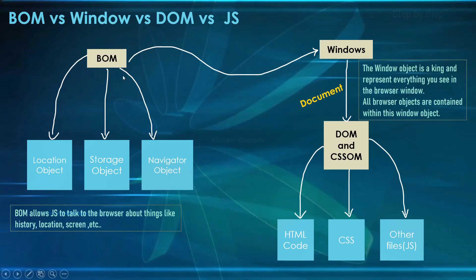Also, if you remember, console — we have already seen that. Console is also a part of DOM, but that can be accessed inside Windows. So this is how everything will be working inside BOM. We can have separate objects: location object, storage object, navigator object, history object. And inside that we are having Windows, and Windows will be treated as a king.